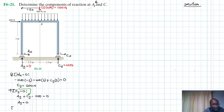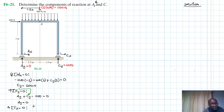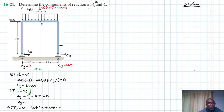For summation of forces in the x-direction, we have Ax + Cx + 600 = 0. This equation has two unknowns, so we cannot proceed further until we separate the structure into two separate members.